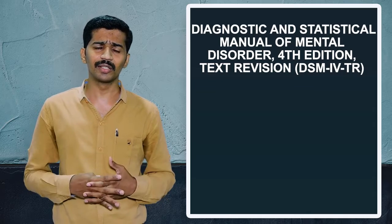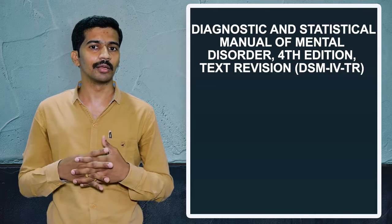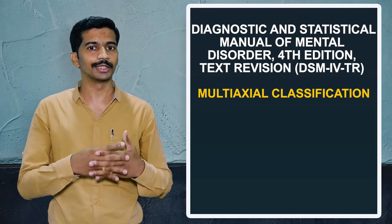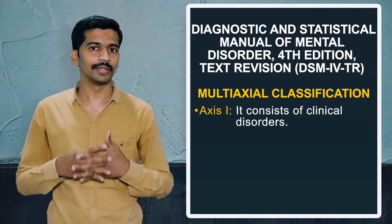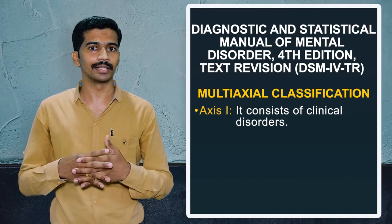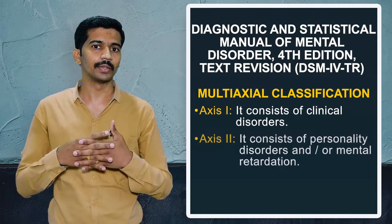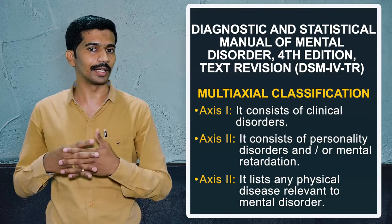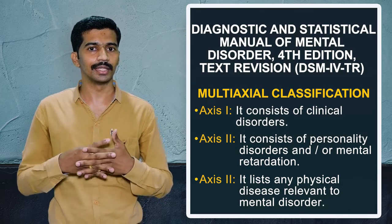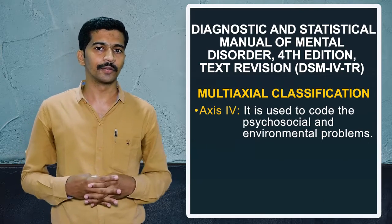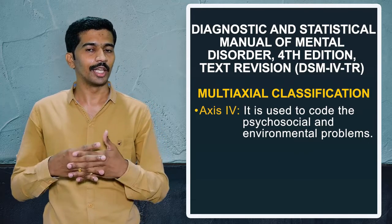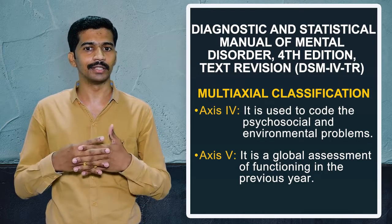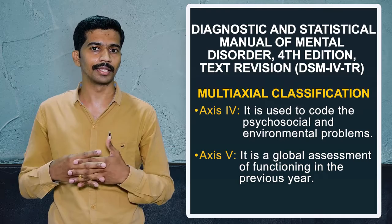In the DSM classification, they follow a multi-axial system, meaning the disorders are classified axis-wise from Axis 1 to Axis 5. Axis 1 covers general psychiatric clinical conditions. Axis 2 covers personality disorder and mental retardation. Axis 3 relates to general medical conditions. Axis 4 covers environmental problems. And Axis 5 relates to global assessment of functioning in the previous year.